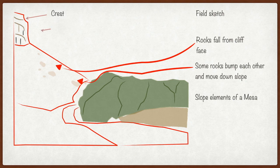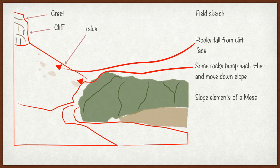And so what are the slope elements? The crest, the cliff, the talus and then in the foreground where we see the vegetation, that is the pediment slope.